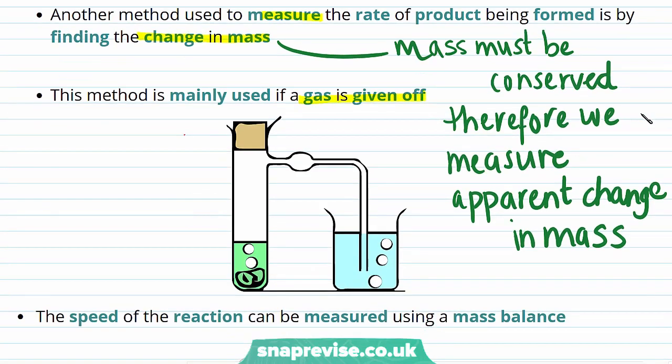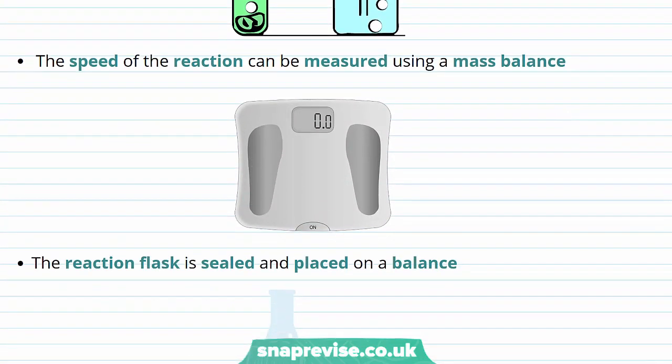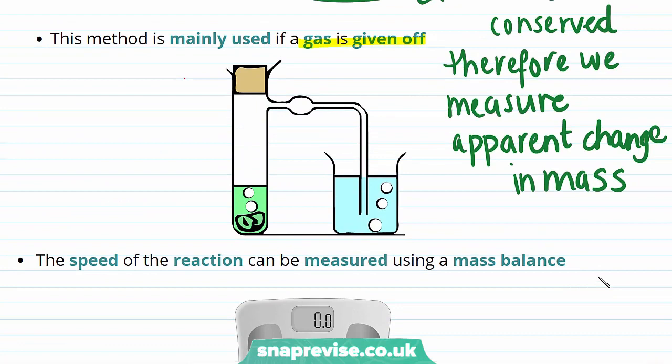This is because if the products are all solids or liquids, their mass can be measured using a mass balance. But a gas cannot be contained, so will leave any container, meaning that its mass will not be measured, and the mass will appear to decrease during the experiment.